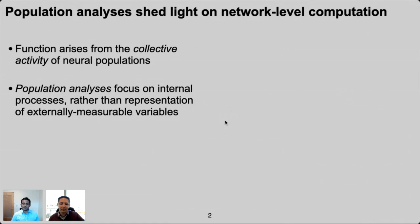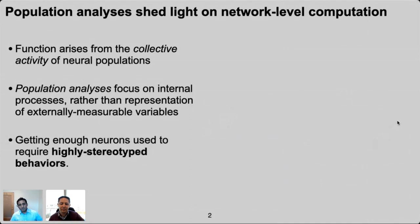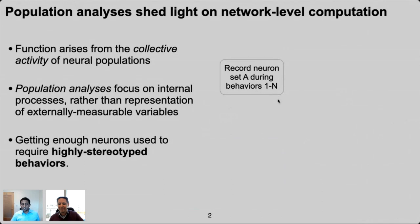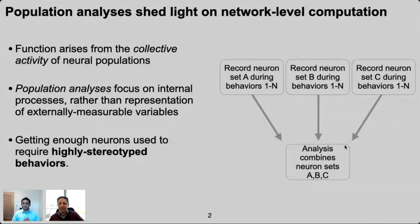Population analyses are nothing new. But when you could only record a few neurons at a time, it used to be hard to get enough neurons to do these analyses. So a common approach was to use stereotyped behavior — making the assumption that if measurable behavior is the same across repeated trials, then the brain is doing the same thing across those trials. You might record from a set of neurons, aggregate those recorded in separate recording windows, and treat them as if they were all recorded at the same time. But this traditional approach meant that population analyses were mainly restricted to looking at the average response properties of neurons under highly stereotyped behavioral conditions.